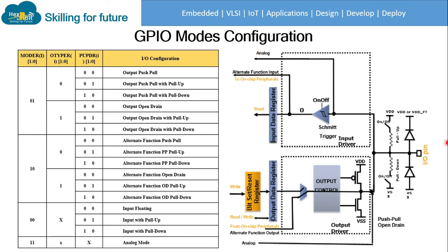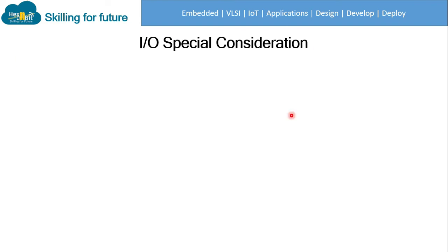The same configuration can be seen in the diagram. This shows the input/output pin connected to the bit set reset register. We connect it to the output control, and depending on the configuration of these MOSFETs, the GPIO configuration is controlled. The output section is at the bottom and the input section at the top, where analog as well as alternate functions are configured.